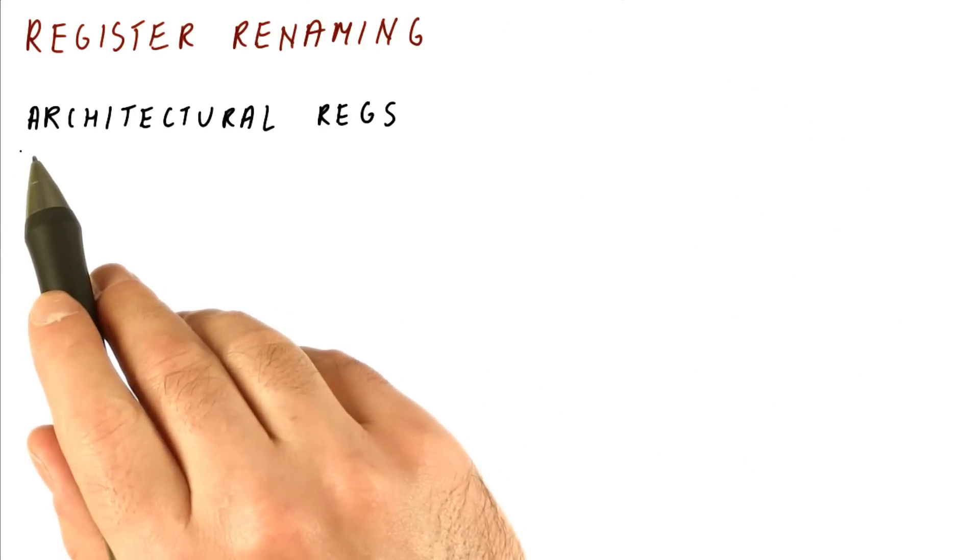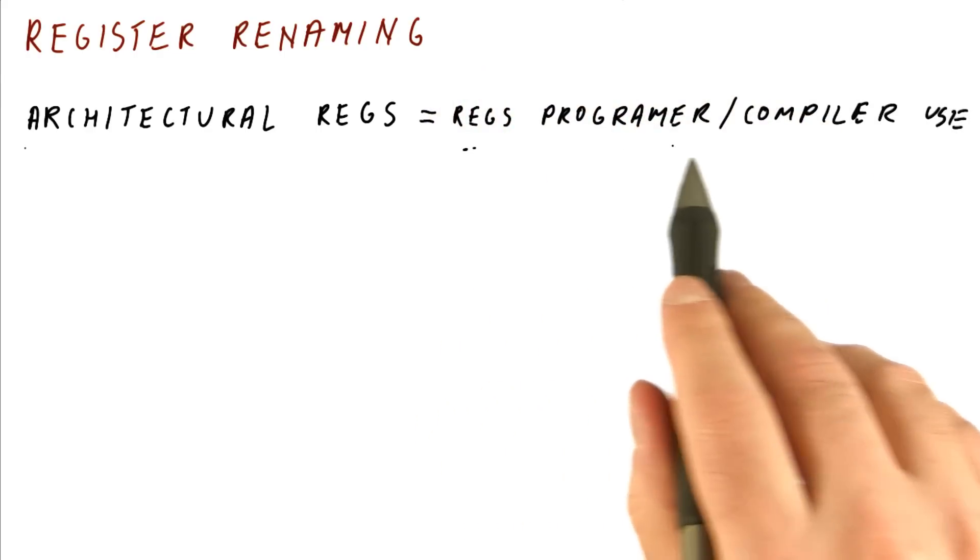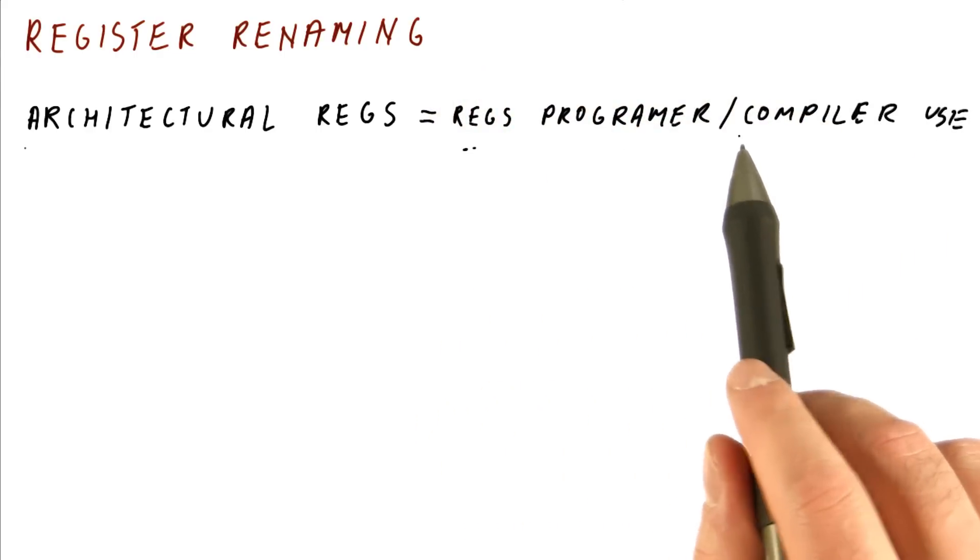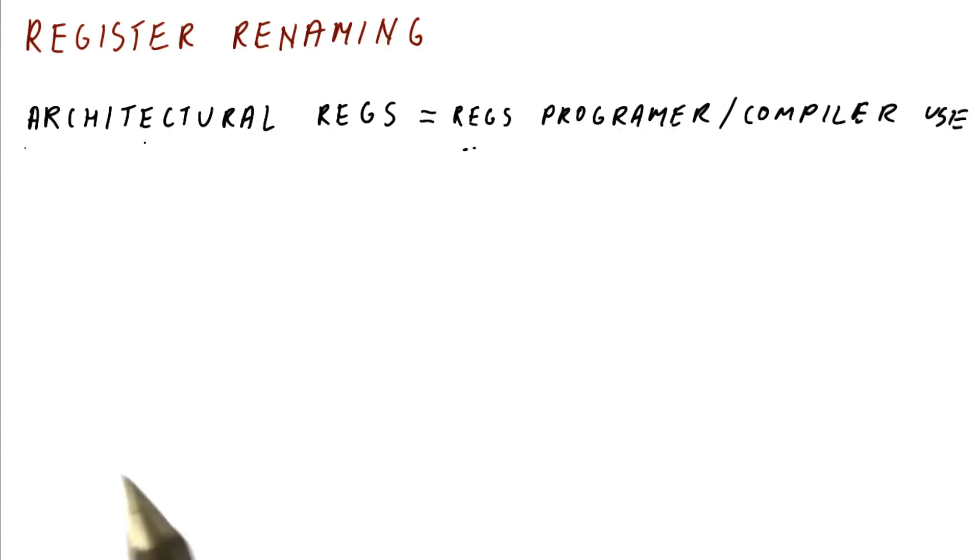Register renaming separates the concept of architectural registers, which are the registers that programmers and compilers use. So when you write an instruction like add r1, r2, r3, the r1, r2, and r3 that you're referring to are the architectural registers.